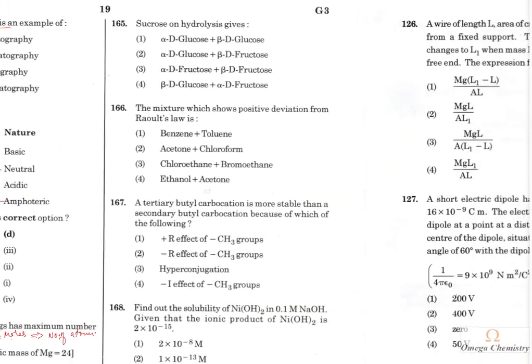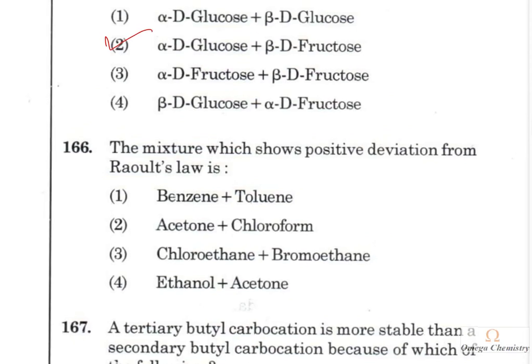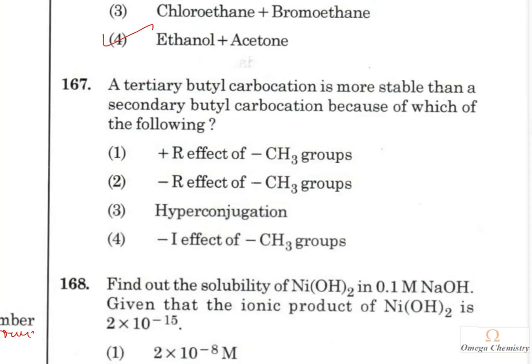Question 173: Sucrose on hydrolysis gives α-D-glucose and β-D-fructose. Option 2 is the right answer. Question 174: The mixture showing positive deviation from Raoult's law requires A-B interactions to be weaker than A-A and B-B interactions. Ethanol and acetone: ethanol has hydrogen bonding and acetone has a dipole moment, but when mixed their interactions are weaker, so they show positive deviation.